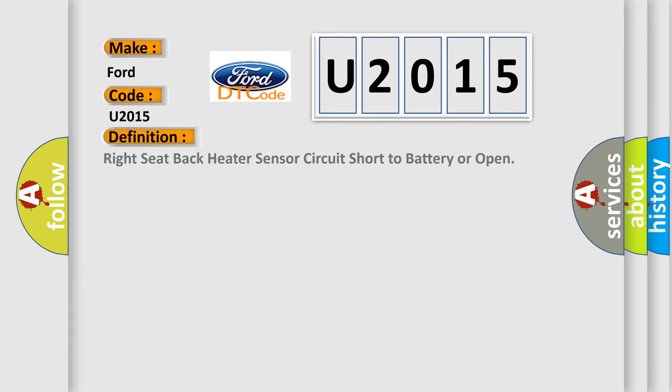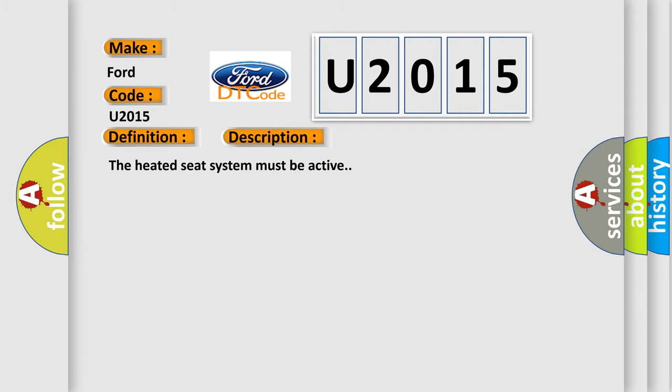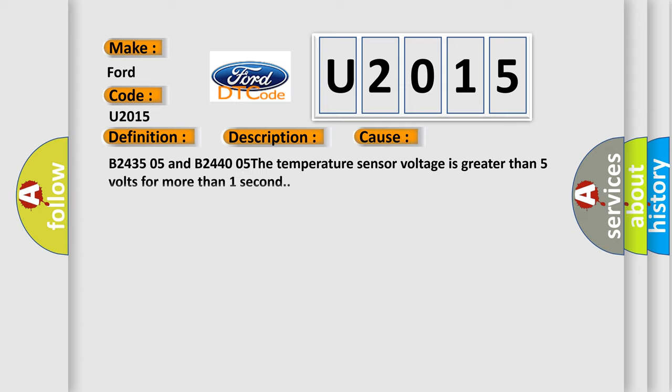The basic definition is: Right seat back heater sensor circuit short to battery or open. The heated seat system must be active. This diagnostic error occurs most often in these cases: B243505 and B244005 — the temperature sensor voltage is greater than 5 volts for more than one second.